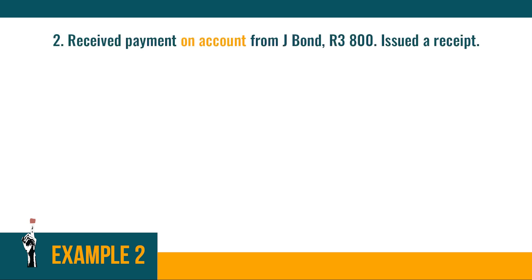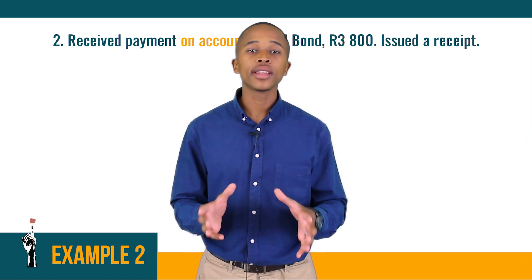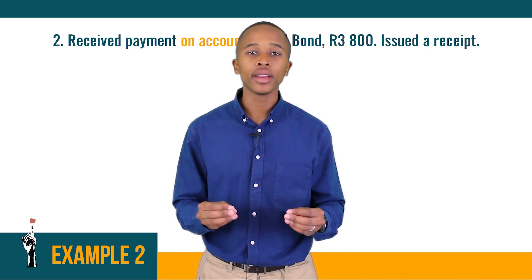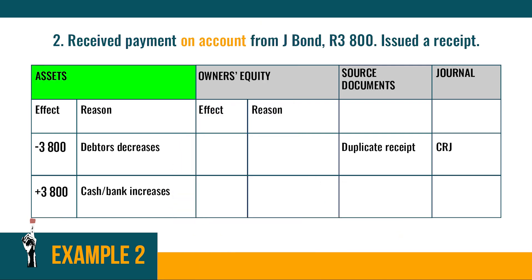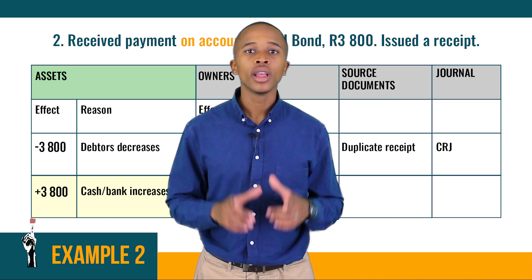Example two: payment was received on account from J Bond for R3,800 — a receipt was issued. When we receive payment on account, it means the debtor has paid all or some of the money owed. Looking at the table: the debt of the debtors decreases by R3,800 because they are paying off their debt, so current assets decrease. At the same time, the bank increases because the business receives R3,800.